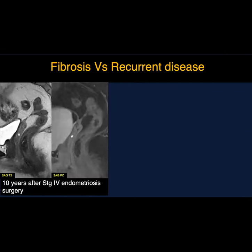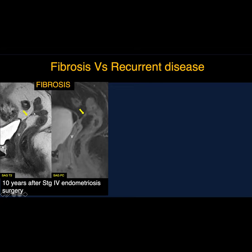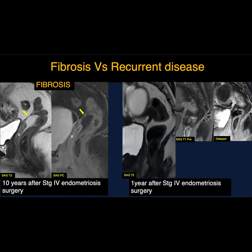Moving on to how to identify recurrent disease from fibrosis. Here are sagittal T2 and post-contrast images in a patient many years after stage 4 endometriosis surgery. You can see a thin T2 hypointense fibrotic band bridging the vaginal wall to the anterior rectal wall with delayed post-contrast enhancement, a little tethering of the anterior rectal wall, but not a lot of distortion of the pelvis. This is merely fibrosis, and fortunately this patient has been asymptomatic.